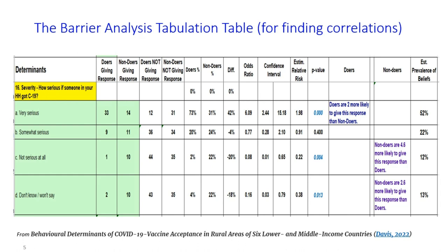I've put links to these resources in the comments. Barrier analysis is flexible in terms of the questions that can be used with it and the determinants one considers. We have a standard set of questions but those aren't the only ones you need to use — you can adapt it to different purposes by looking at what we know about what seems to be driving a particular behavior. What I'm suggesting is that we could use some of the ways we analyze barrier analysis data — looking for correlations — and apply that to the Behavioral and Social Drivers survey questions.